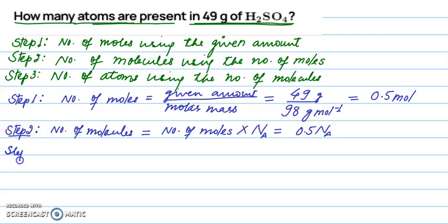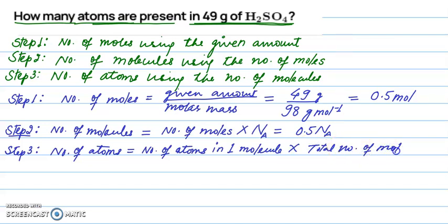Now in step three, we'll find the number of atoms. For number of atoms, we'll use: number of atoms in one molecule times total number of molecules. We found the total number of molecules in step two. So, how will we find the number of atoms in one molecule?